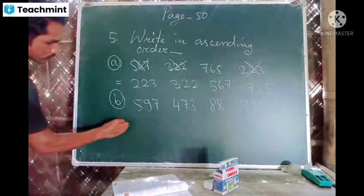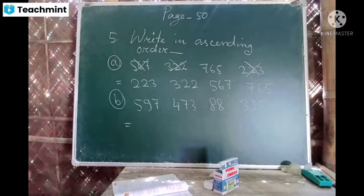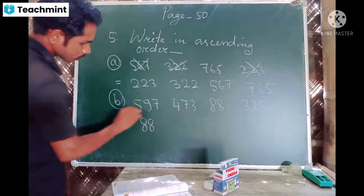This one also, we have to do ascending order. So which number is very small? Very good, 88 is very small, so we have to write 88 here.